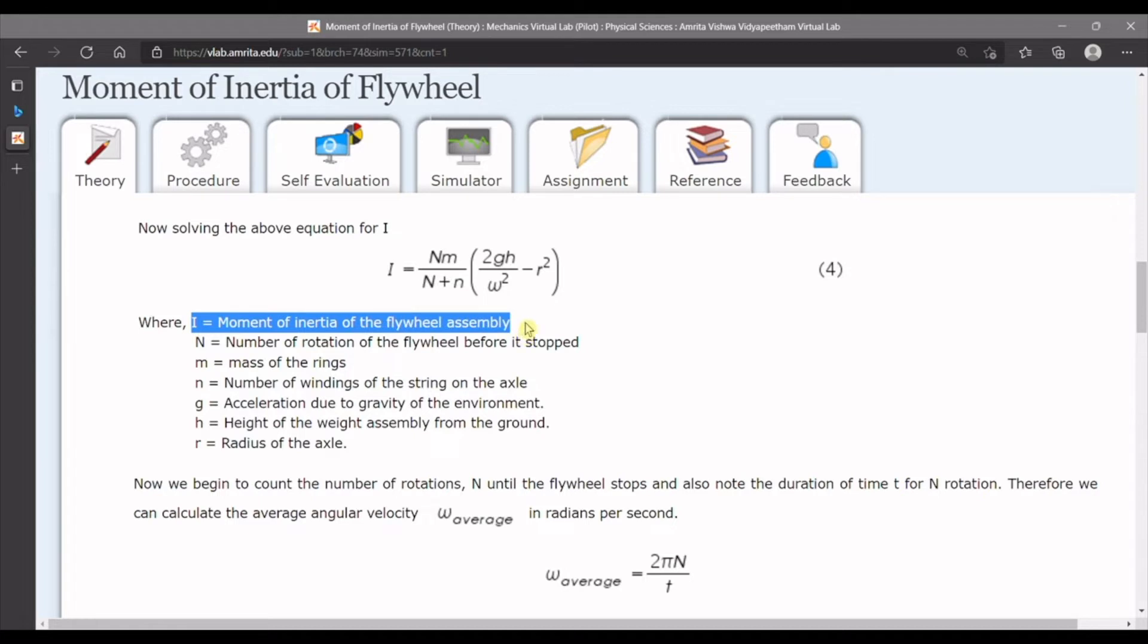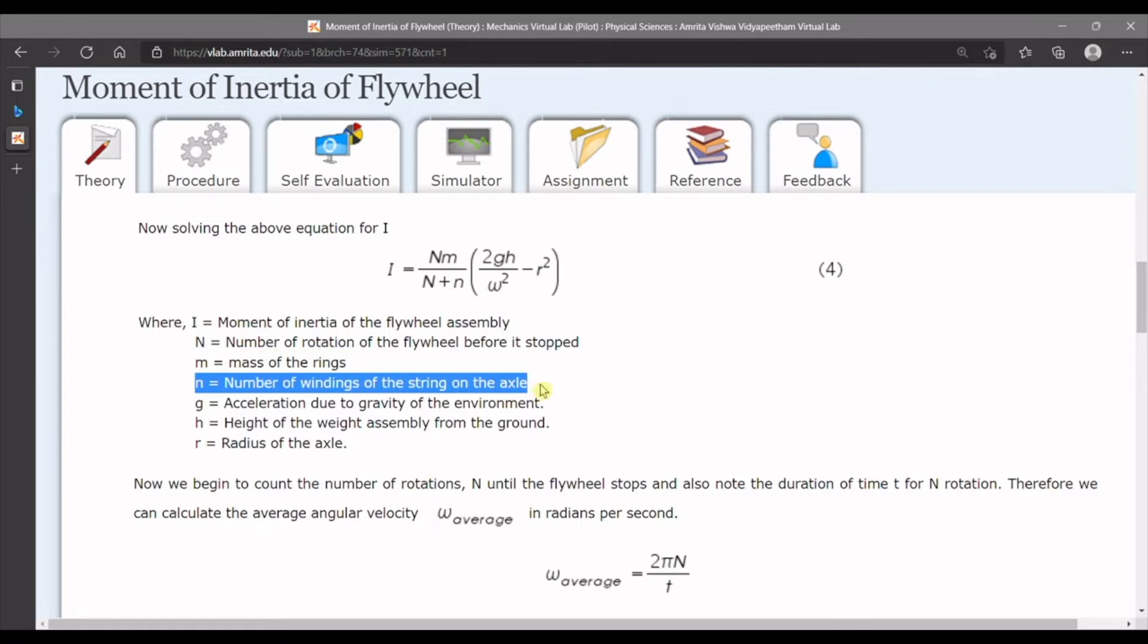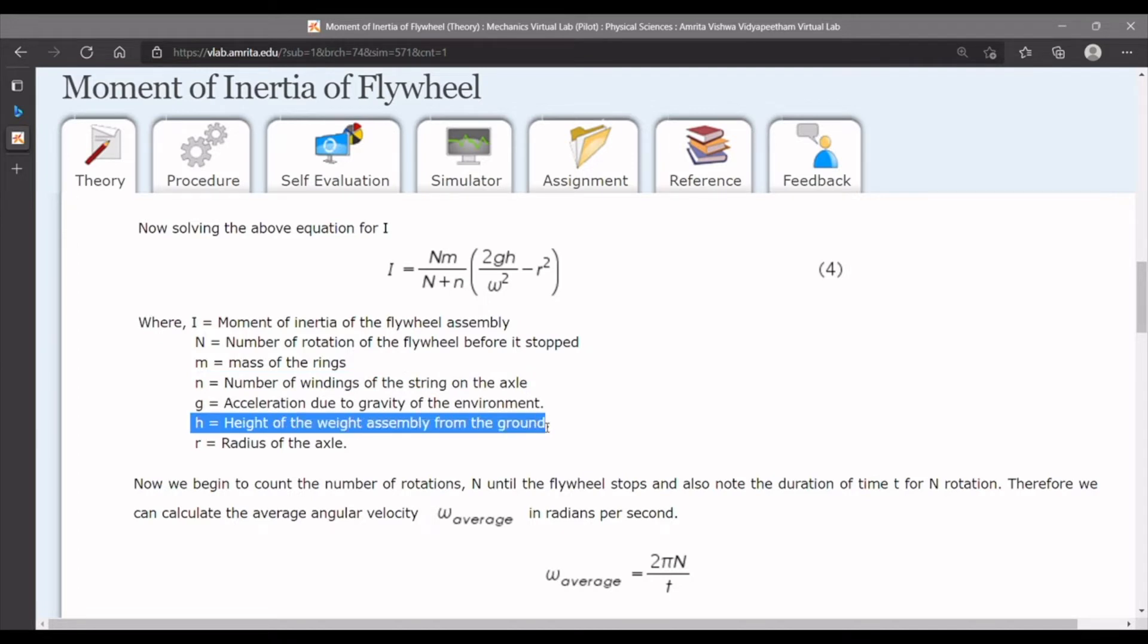Here I is the moment of inertia of flywheel, capital N denotes the number of rotations of the flywheel before it stops, m is the mass of the weight hanger, small n is the number of windings of the string on the axis, h is the height of the weight hanger from the ground, r is the radius of the axle, and g is the acceleration due to gravity of Earth, which we take as 9.8 meters per second squared.